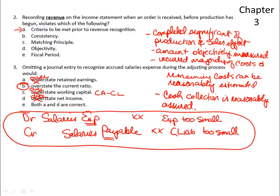So the answer is B, because current assets over current liabilities is the current ratio. If current liabilities are too small, the current ratio would be overstated because the denominator would be too small. Hopefully these two multiple choice questions on chapters 3 and 4 will make sense for the first exam.